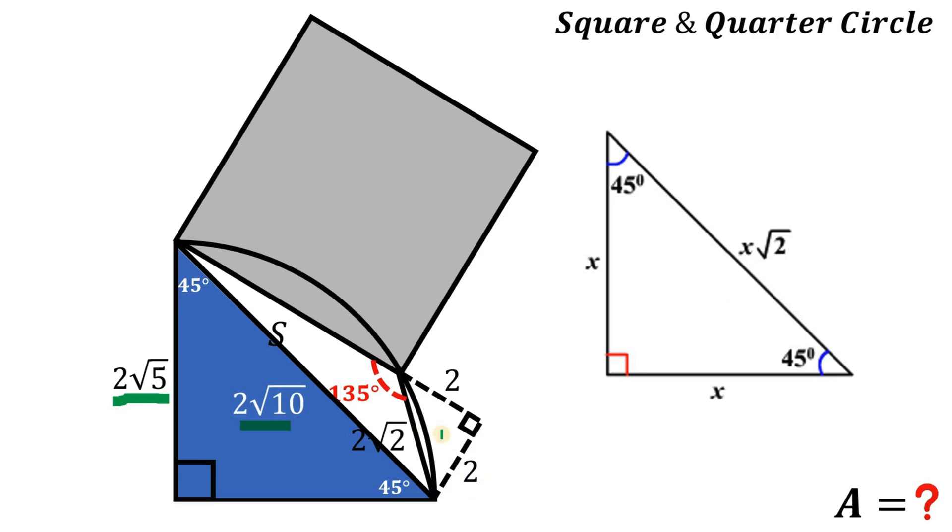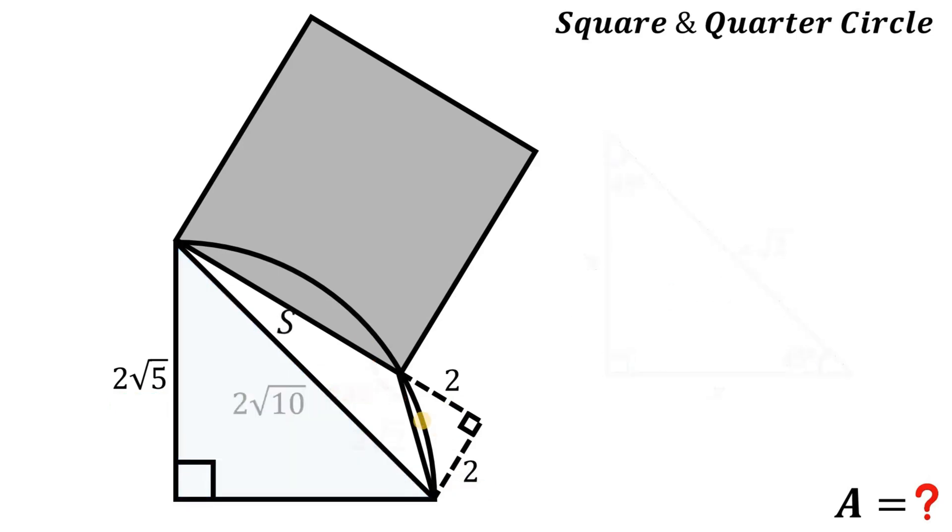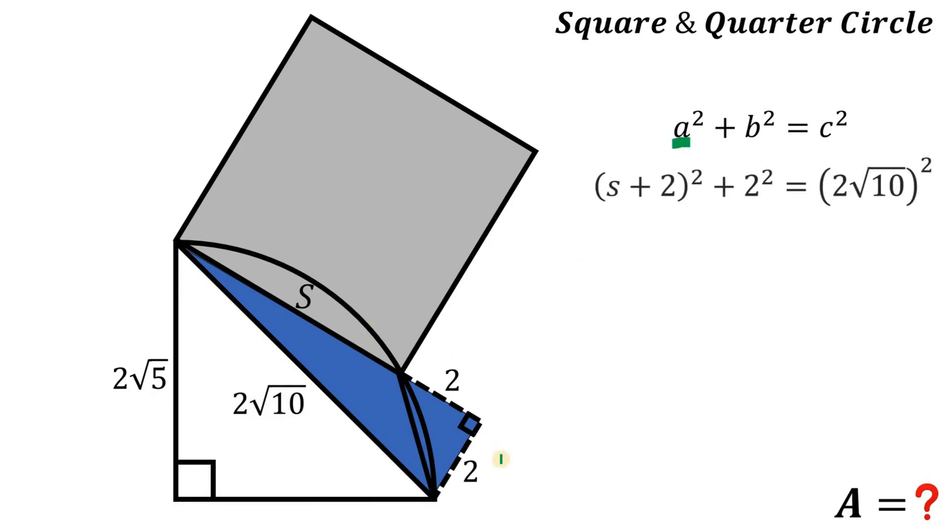Now using this information, we can get the value of s. If we use this right triangle and use the Pythagorean theorem, a² + b² = c², we can get the value of s. So let a be equal to s + 2, b equals 2, and c equals 2 times square root of 10.